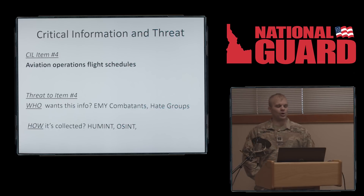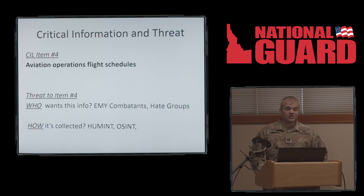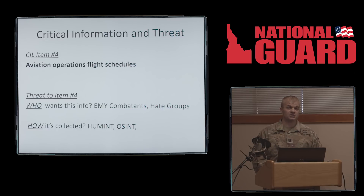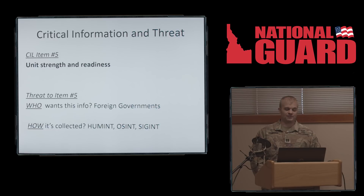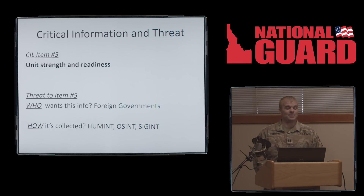Item number four is aviation operations and flight schedules. Enemy combatants and hate groups want this information, and it will most often be collected by HUMINT or OSINT. Item number five is unit strength and readiness. Foreign governments — not just hostile nations, but other governments — want this information, so even countries we're friends with are not necessarily entitled to know it. Collection methods are HUMINT, OSINT, and SIGINT.